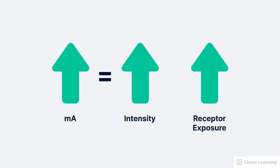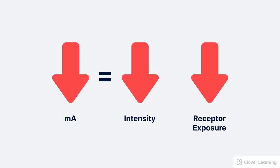Tube current, or the MA, also affects the receptor exposure in the exact same way that it affects intensity. If we increase the MA, the receptor exposure also increases by the same amount. So if we double the MA, the number of x-rays striking the receptor, that's the receptor exposure, will also double. And of course, the opposite is true. If we decrease the MA, this decreases the intensity and the receptor exposure by the same factor.